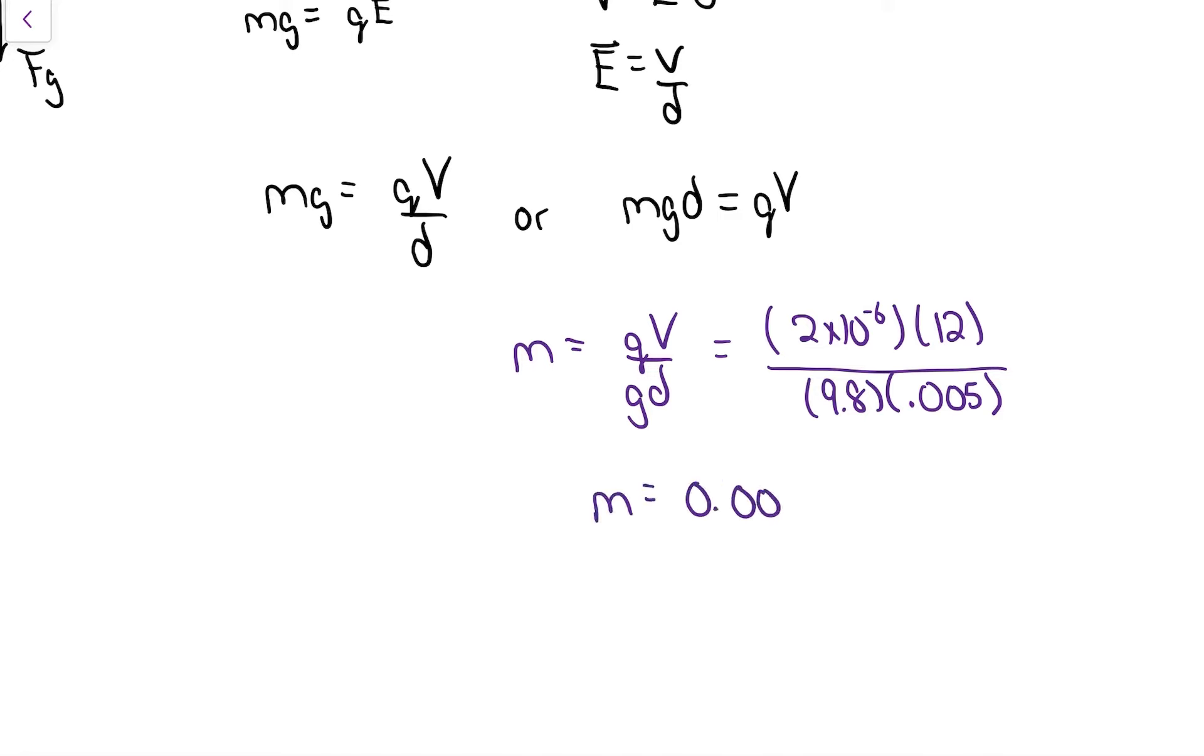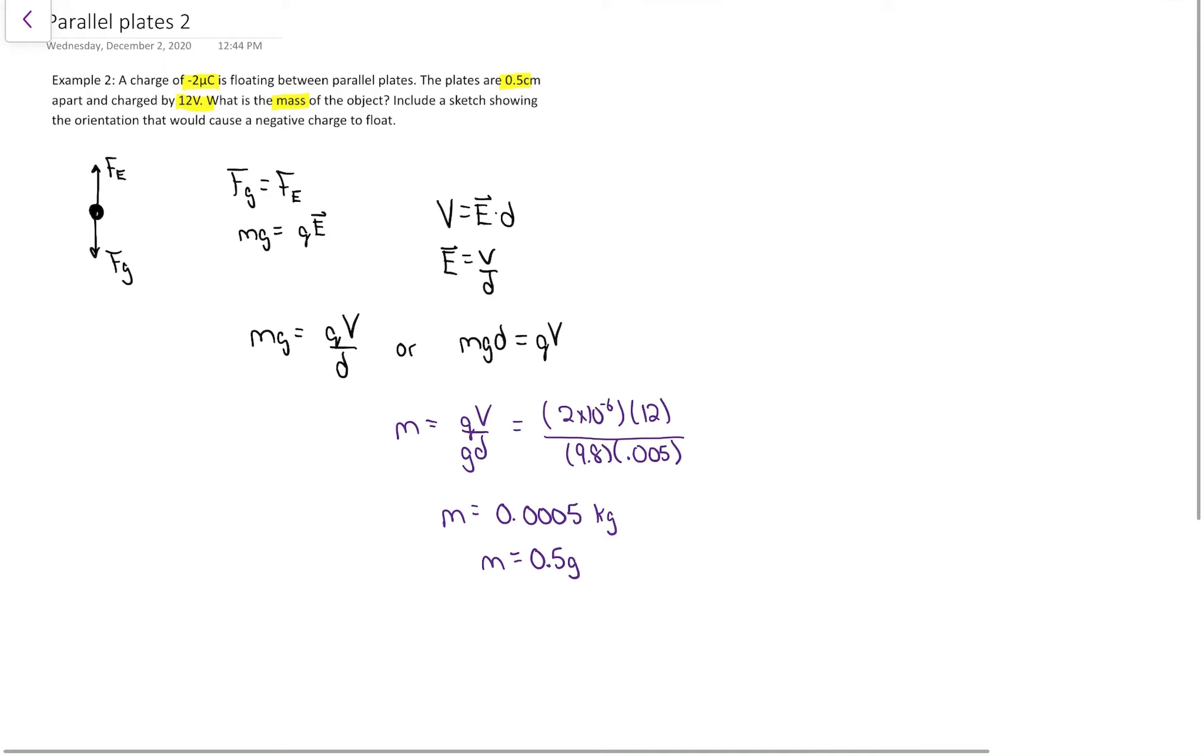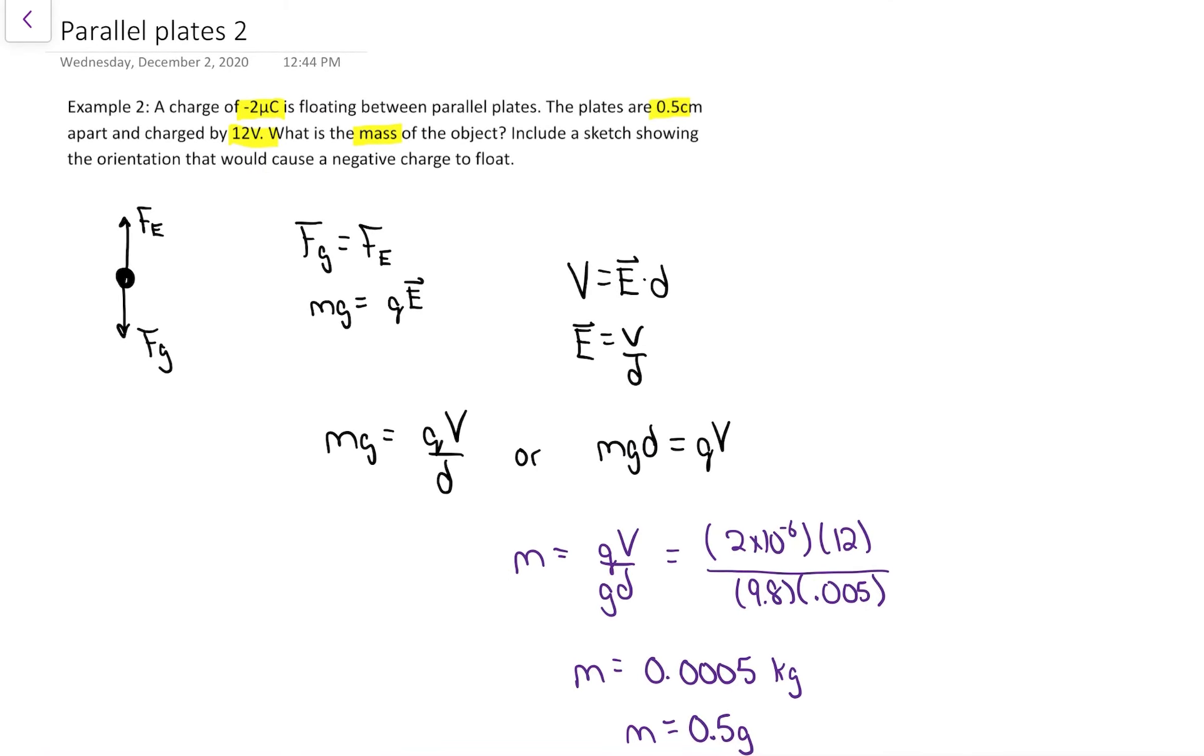Cranking that out, I get m equals 0.0005 kilograms, which is really 0.5 grams. Now back to the question.